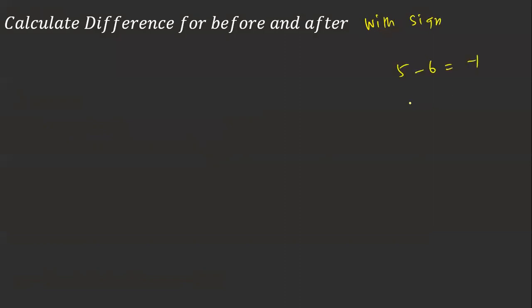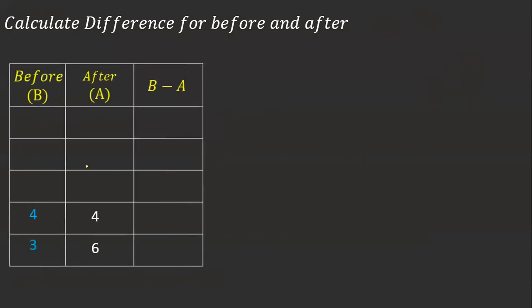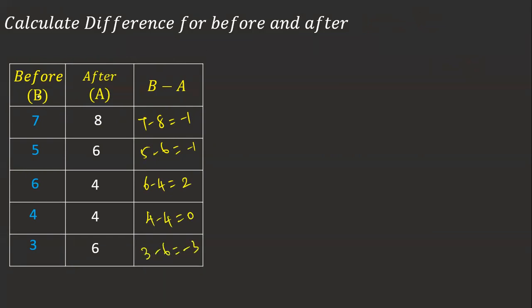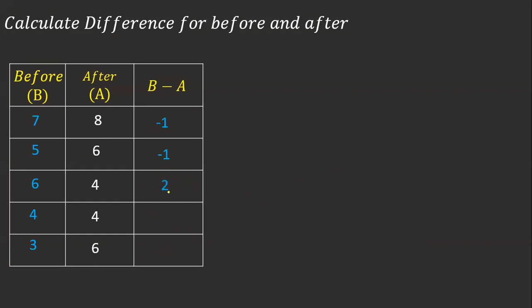Step 1: Calculate the difference (Before minus After) with sign. For example: 7 minus 8 gives minus 1; 5 minus 6 gives minus 1; 6 minus 4 gives plus 2; 4 minus 4 gives 0; 3 minus 6 gives minus 3. Whenever the difference is zero, we omit that value from further analysis. So our differences with sign are: −1, −1, +2, (0 omitted), −3.